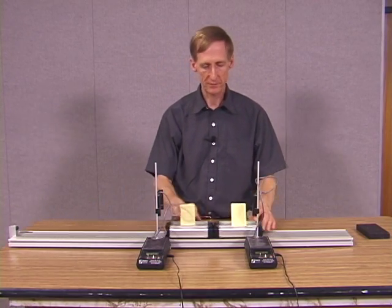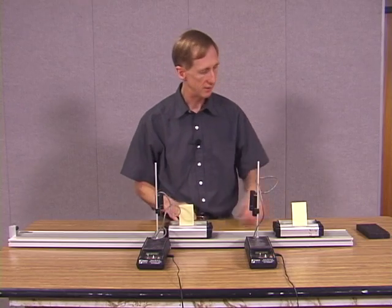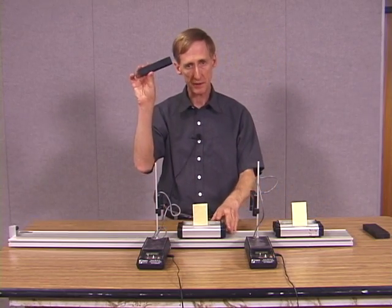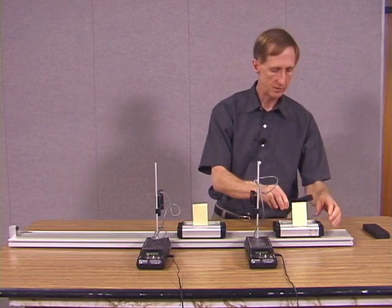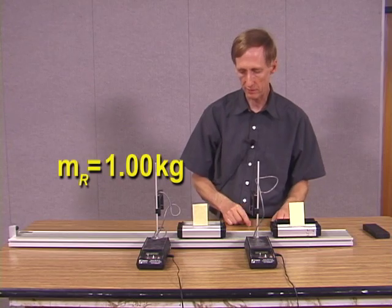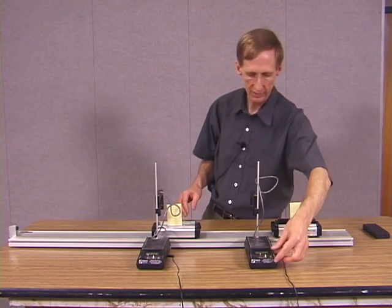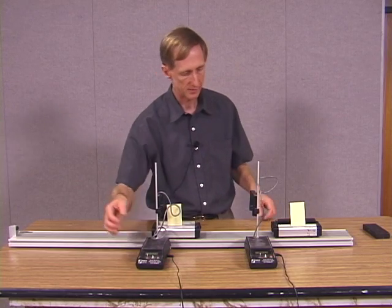Well now what I'm going to do is put different amounts of mass in the carts and get some more data. So I'll take one of these bars. Now each bar is half of a kilogram, and each of the carts is half of a kilogram. So that makes this cart now one full kilogram with the load on it. This one is still a half. Get that one ready. Reset the photogates. Here goes.